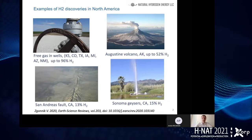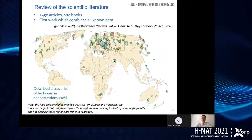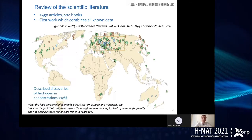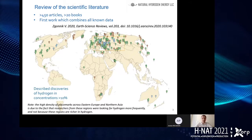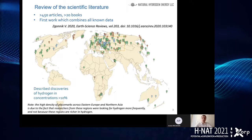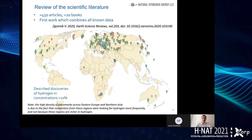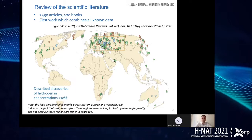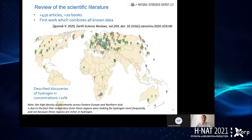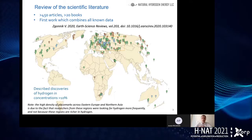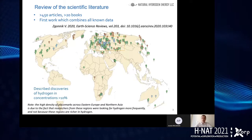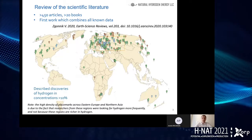When we go to a world map where I have placed discoveries published in literature with concentrations more than 10% — in various environments like free gases, dissolved gas in aquifers, and gas in inclusions — you can instantly see that most of the place marks are located in Eastern Europe and Northern Asia territories.